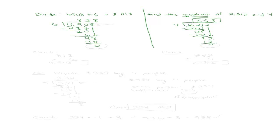We can check both of these answers because multiplication and division are related. To check my first answer, I multiply my quotient times my divisor — if I did everything right, I get back my dividend, 4,908. For the other problem, I check by taking my quotient 553 times my divisor 4. Your answer should be 4,908 for the first example and 2,212 for the second example — I'll let you go ahead and do that on your own.